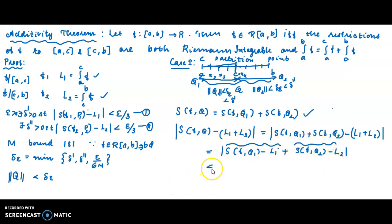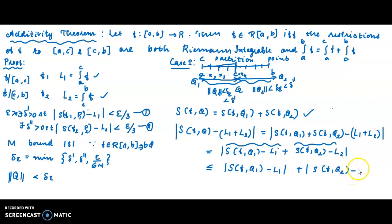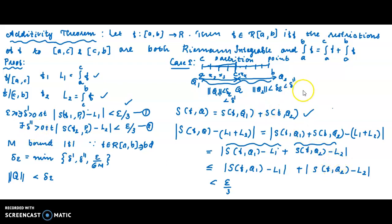Applying the triangle inequality — modulus of A plus B is less than or equal to modulus of A plus modulus of B — we get: modulus of S(f, Q1) minus L1 plus modulus of S(f, Q2) minus L2. Since norm of Q1 is less than delta-dash, modulus of S(f, Q1) minus L1 is less than epsilon by 3. Since norm of Q2 is less than delta-double-dash, modulus of S(f, Q2) minus L2 is less than epsilon by 3. So the total is less than 2 epsilon divided by 3.